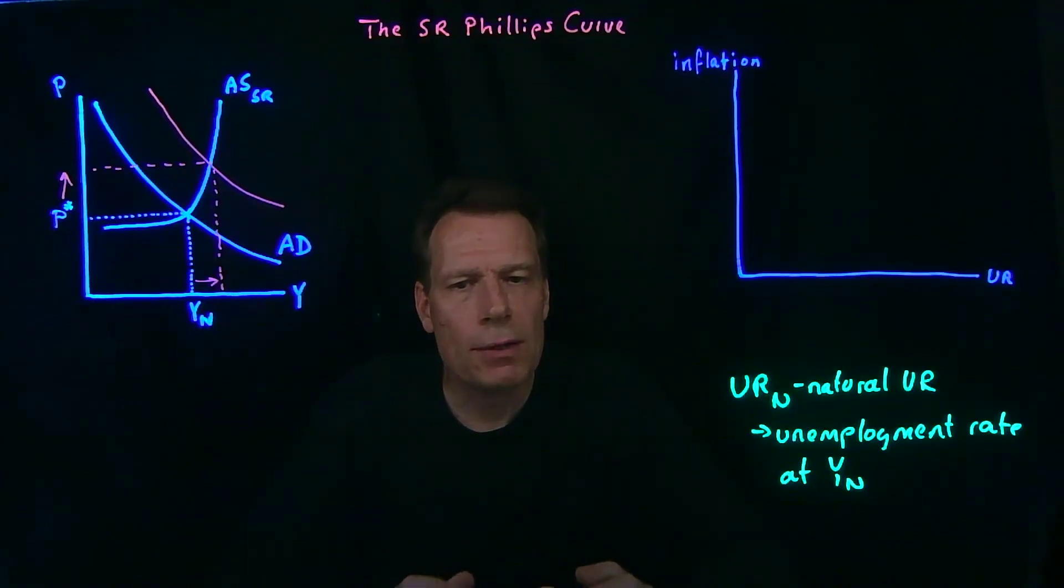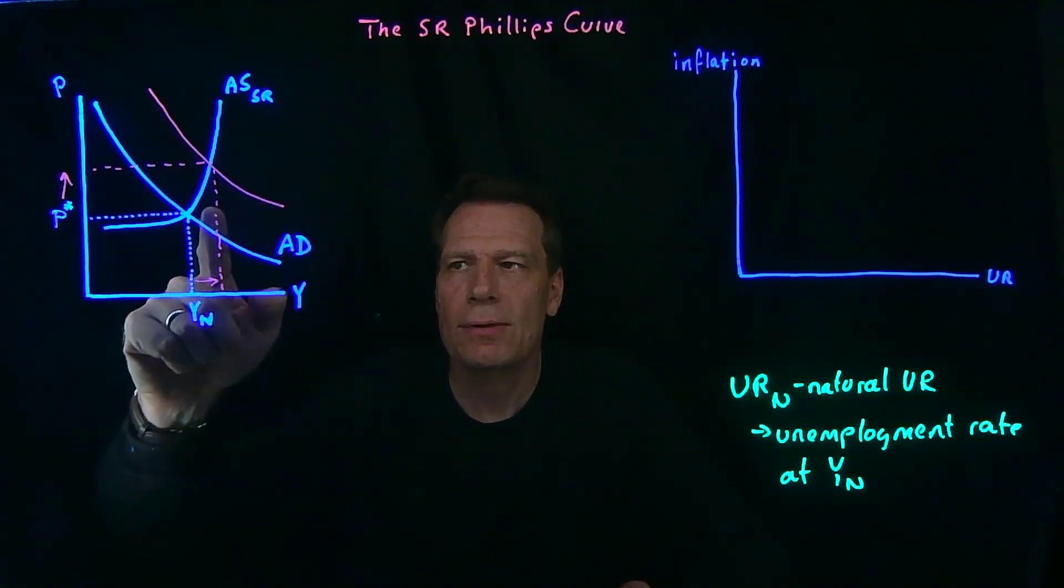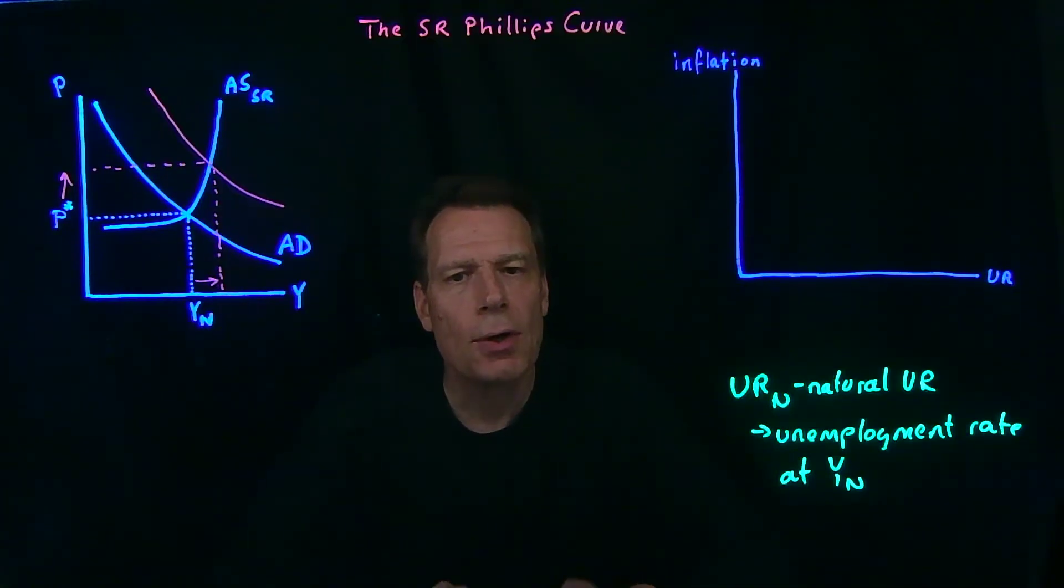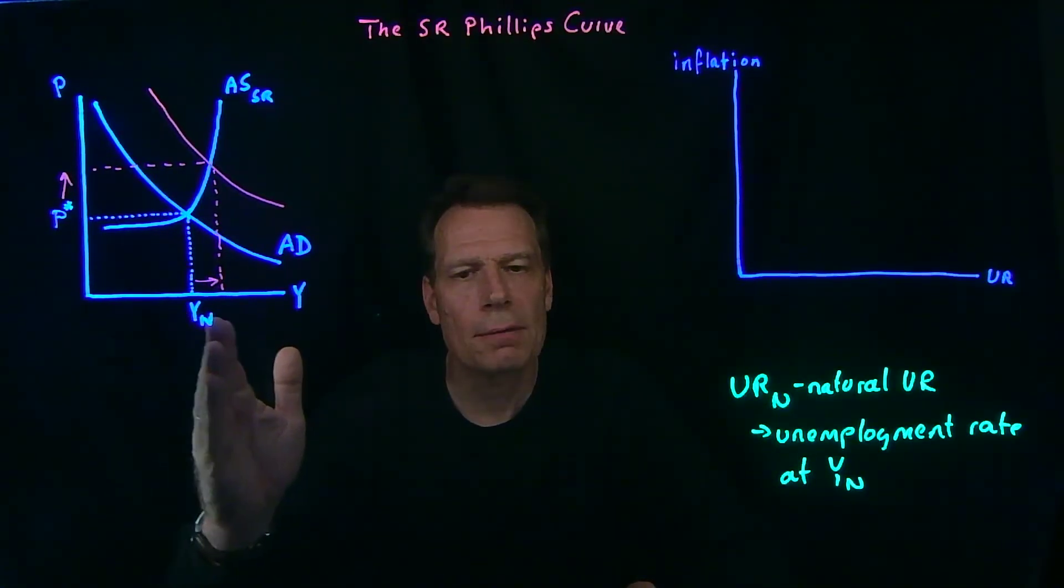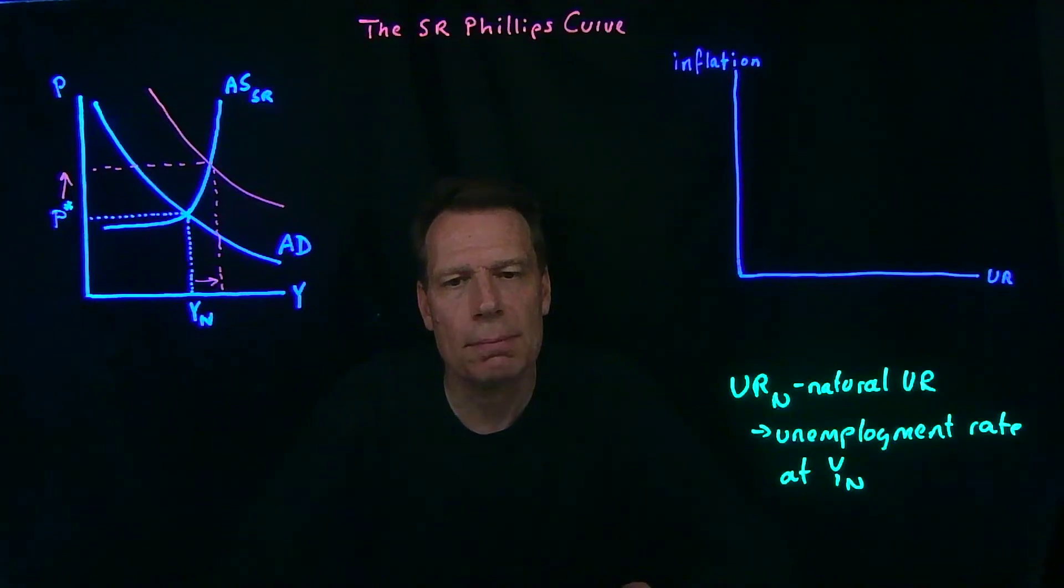The only way to do that is to offer higher wages. And as wages go up, there's upward pressure on prices, because firms are going to pass those increased wage costs on to consumers. So that leads to that upward pressure on prices, to that inflation, as we push the economy beyond the natural level of GDP.